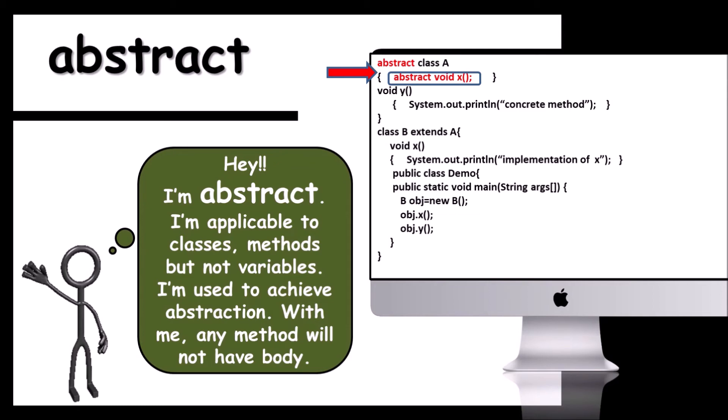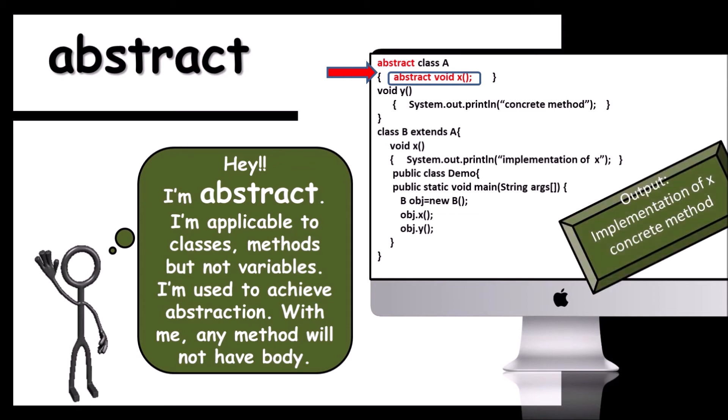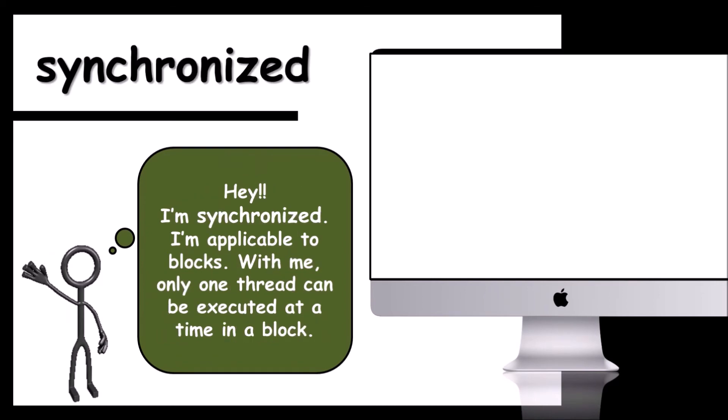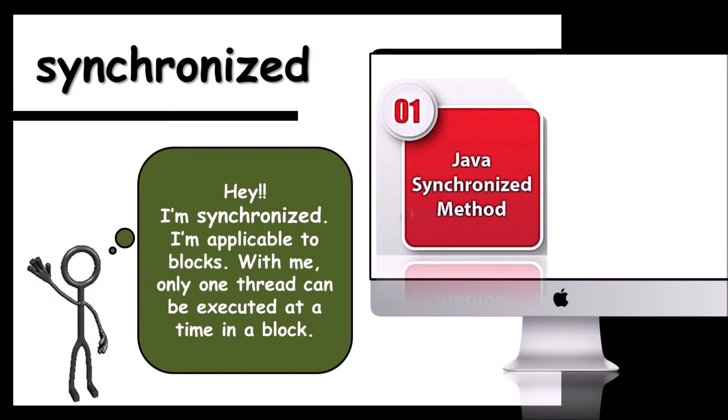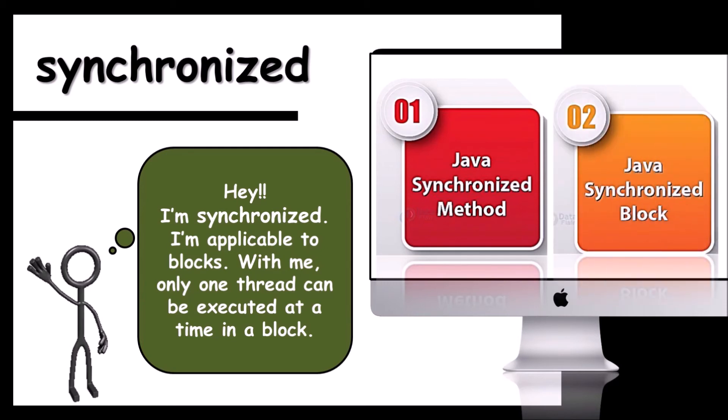Here comes synchronized keyword. Hey, I'm synchronized. I'm applicable to blocks. With me, only one thread can be executed at a time in a block. Here, Java synchronized method means it makes sure that only one thread can access a particular resource at a given point of time. And next one is Java synchronized block. It means that Java itself provides a way to create a thread and to synchronize their task by synchronized blocks.